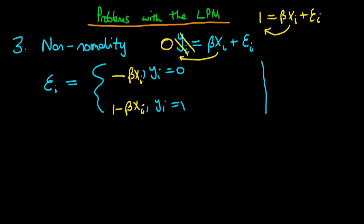Okay, so let's think about this a little bit further. For one error epsilon i, we can mark on its two potential values. One of the values is going to be minus beta xi, and the other value is just going to be 1 minus beta xi.